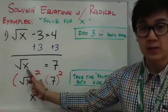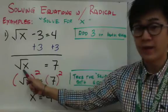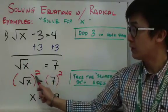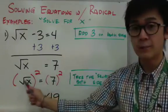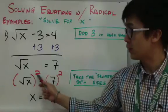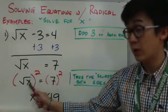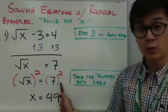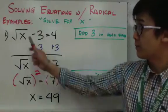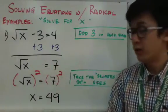Now x is still not by itself because you can still see the square root symbol with x. To get rid of the square root symbol, you need to square both sides to eliminate the radical. So x is now by itself — you have 7 squared which gives you 49. So x is equal to 49.